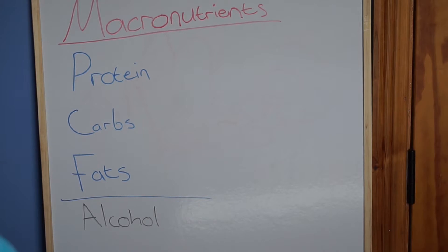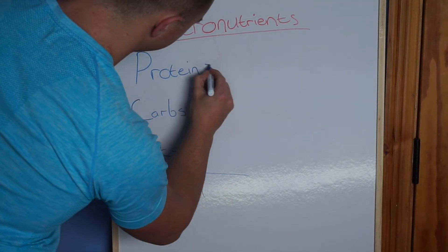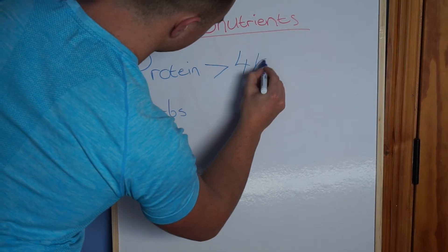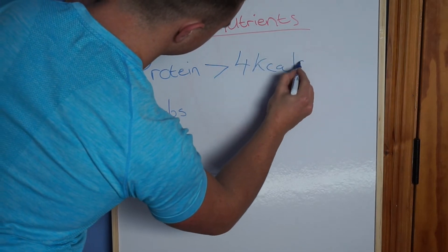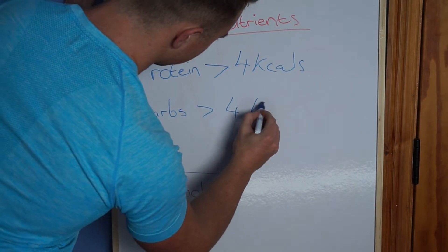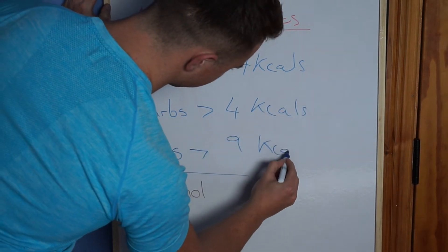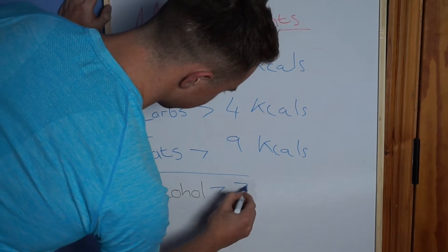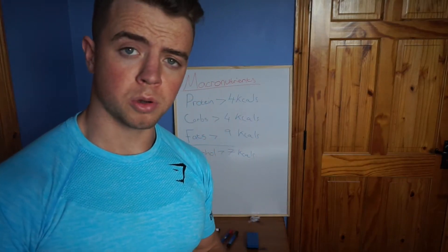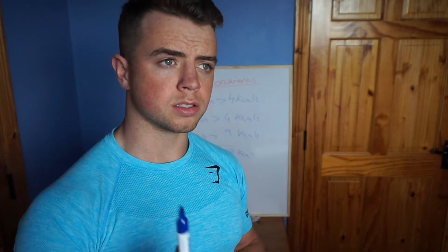Macros is short for macronutrients, and there are four macronutrients. You have your protein, carbs, fats, and alcohol — but in this video we're not gonna be talking about alcohol, so that one's out. Protein has four calories per gram, carbs is the same, fat has nine calories per gram, and alcohol has seven.